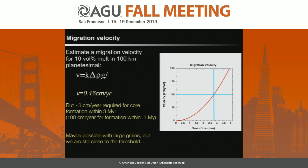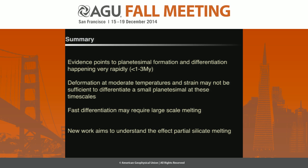From the permeability values obtained through lattice Boltzmann modeling, we can estimate a migration velocity of about 0.16 centimeters per year, which tells us how quickly we can segregate melt through these materials. We require at least an order of magnitude higher velocity to form even a small planetesimal in the estimated time frames. So in summary, we have evidence pointing to very rapid core formation in planetesimals and iron meteorite parent bodies. Our results show that deformation at moderate conditions is probably not enough, and that we may need more widespread silicate melting — and that's the next stage of this project. Thank you.